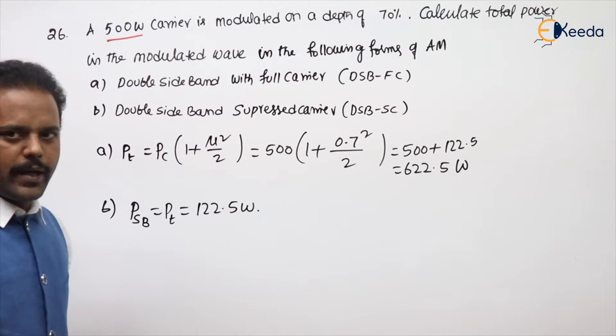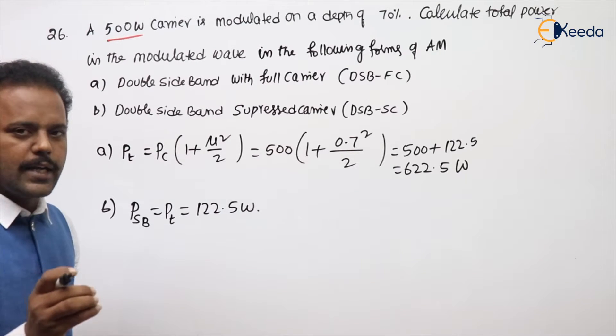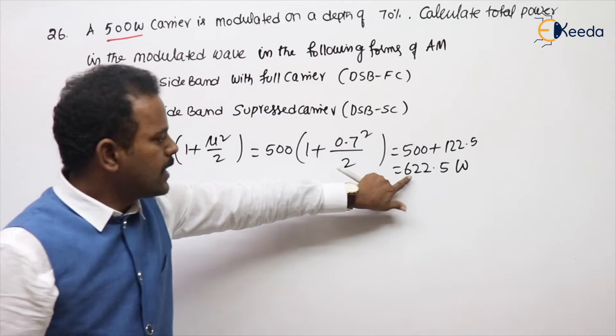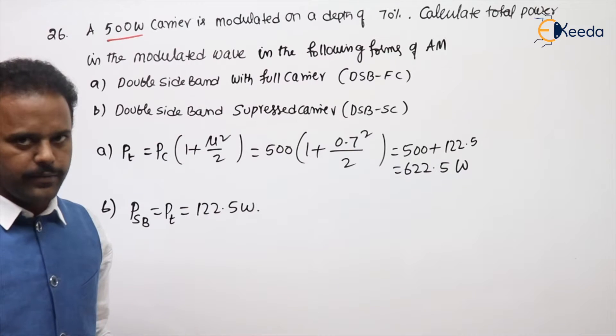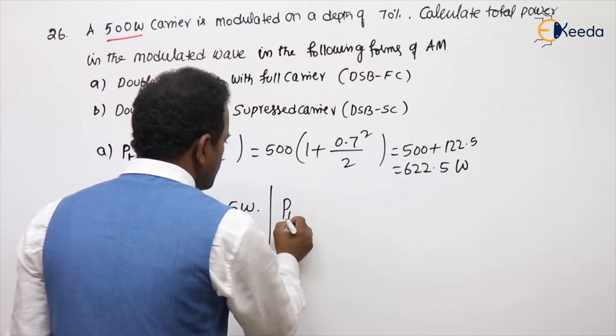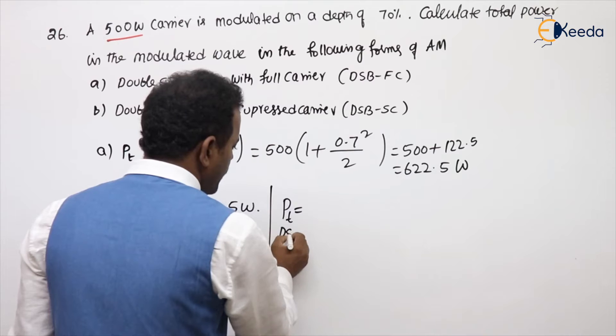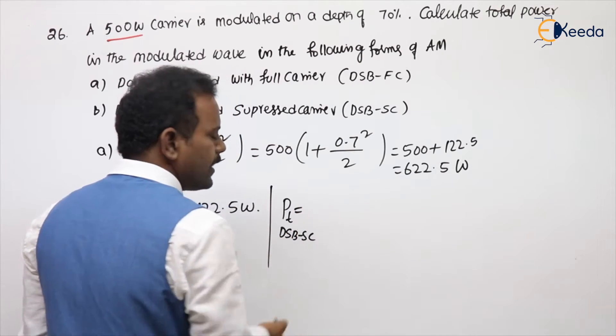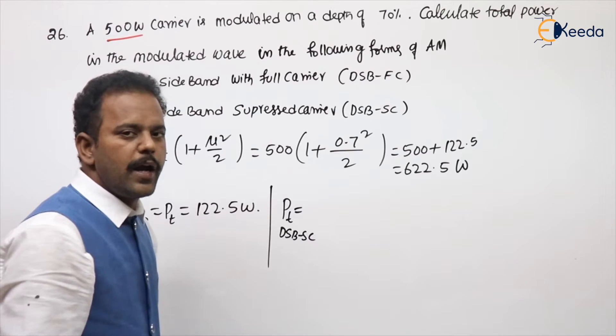Another thing we can also make, the power saved in DSBFC when compared to AM is carrier power. Subtract the carrier power you get. Or, what is the power formula in DSBFC? AC square AM square by 4R.